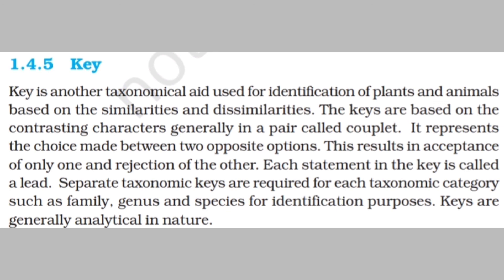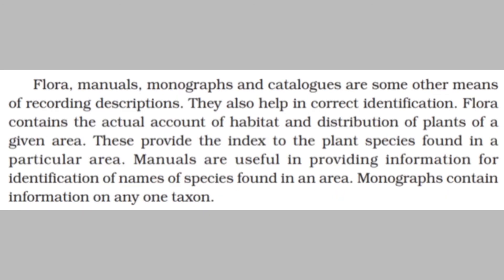Keys are generally analytical in nature — we analyze two opposite options to choose the better one. Some other taxonomical aids are flora, manuals, monographs, and catalogues, used for recording descriptions and helping in correct identification. Flora contains the actual count, habitat, and distribution of plants in a given area, providing an index to plant species found in that area. Manuals are useful in providing information for identification of species found in that area. Monographs contain information on any one taxon.